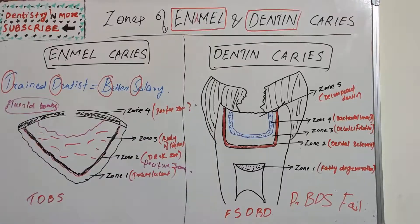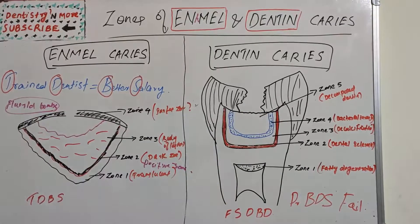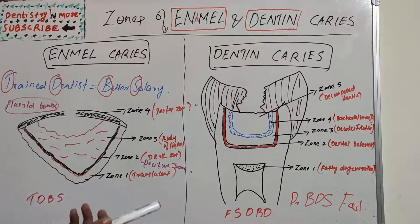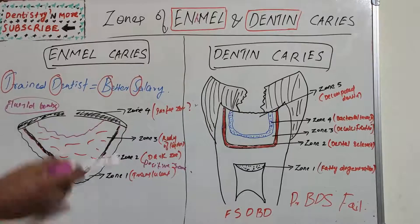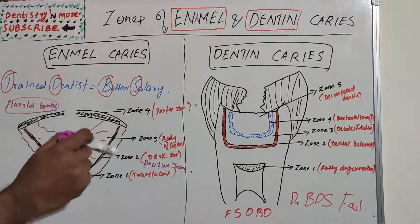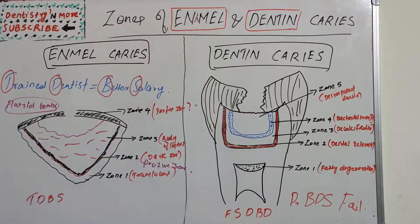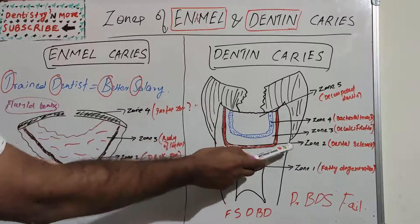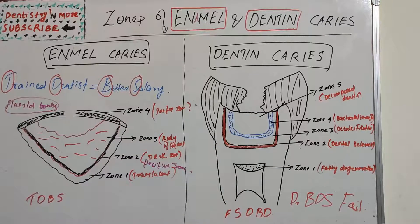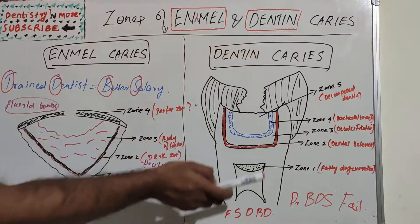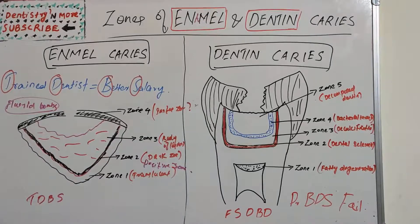Zone 4 is the zone of bacterial invasion. There is widening and distortion of the dentinal tubules, which are filled with bacteria. This part of dentine is not self-repairable because of low mineral content and irreversible denaturation of collagen. Unlike Zone 2, which is self-repairable, Zone 4 must be removed during tooth preparation.